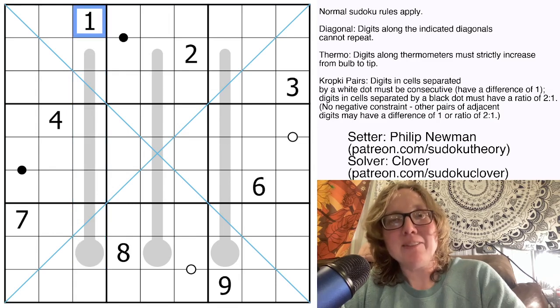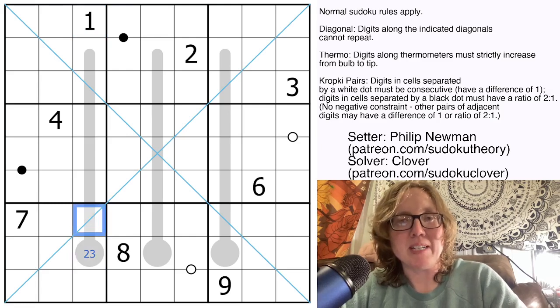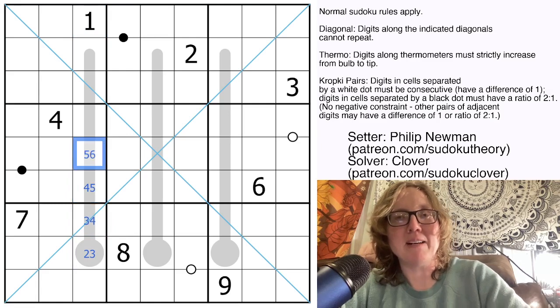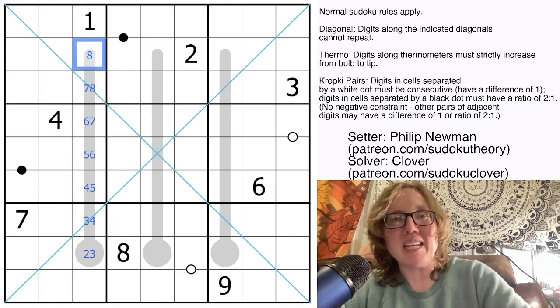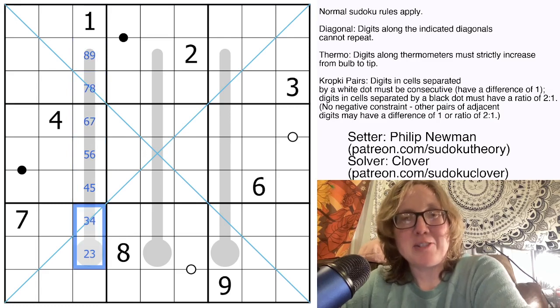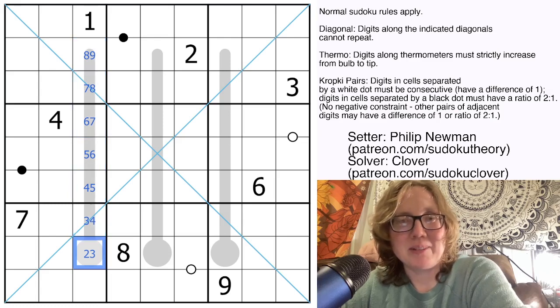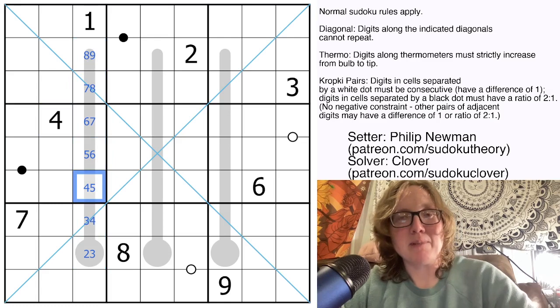But I lose a degree of freedom here because this can't start with 1. The lowest digit it can possibly start with is 2. So this can either be 2 or 3. This is 3 or 4, 4 or 5, 5 or 6, 6 or 7, 7, 8, 8 or 9. And that's just all kind of a fancy way of saying, let's just pencil mark in possibilities that will allow us to have increasing digits going upwards along this thermometer.